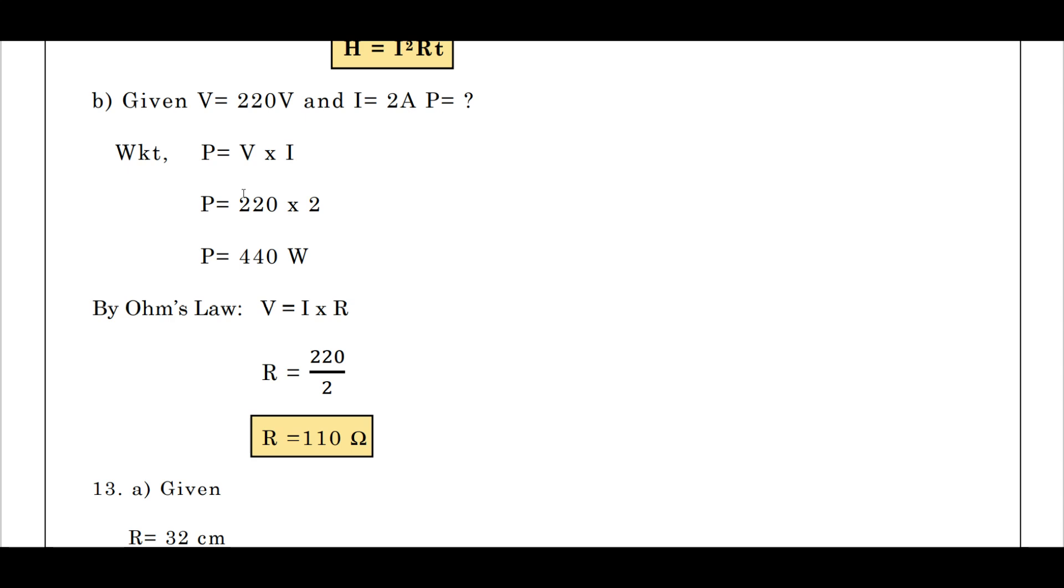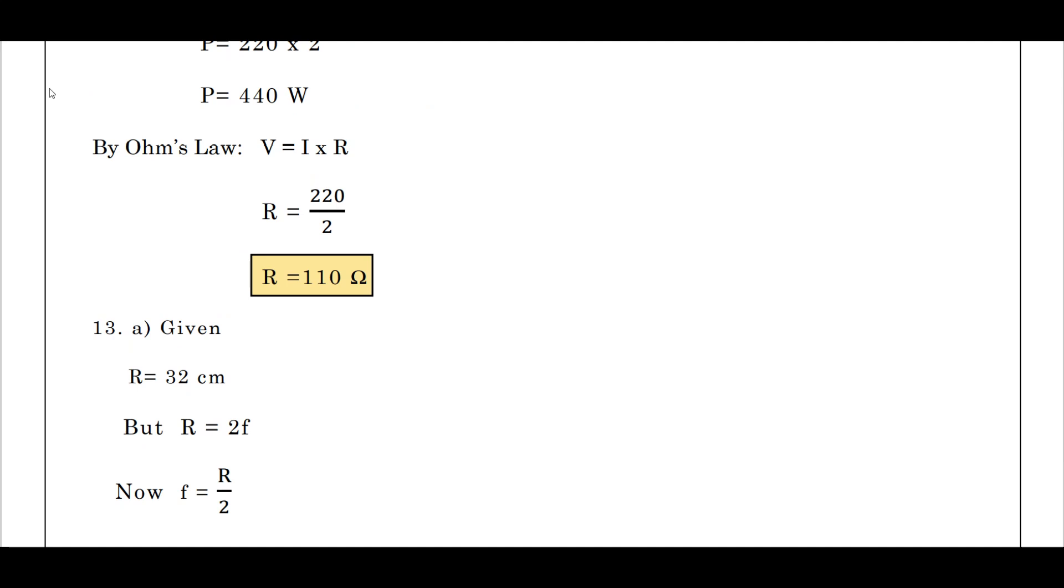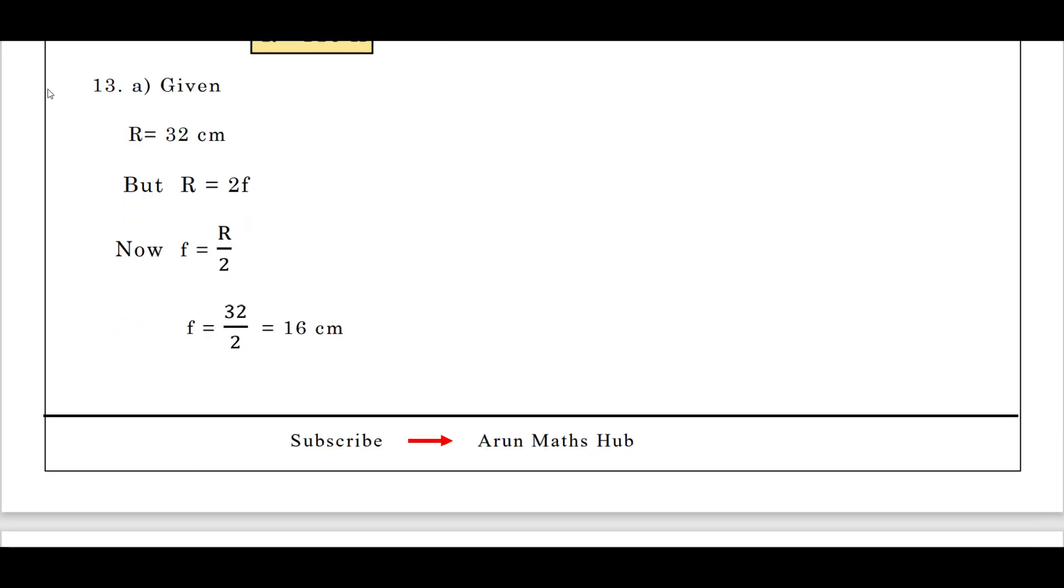Moving to 13th question: find the focal length of a convex mirror that has a radius of curvature 32 centimeter. Given radius of curvature R = 32 centimeter. We know the relationship between radius of curvature and the focal length: R = 2f. Now f = R divided by 2, f = 32 divided by 2, we get 16 centimeter.